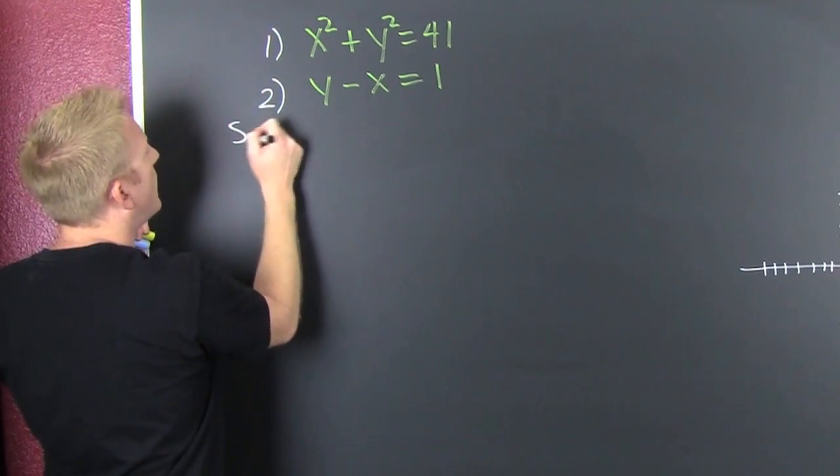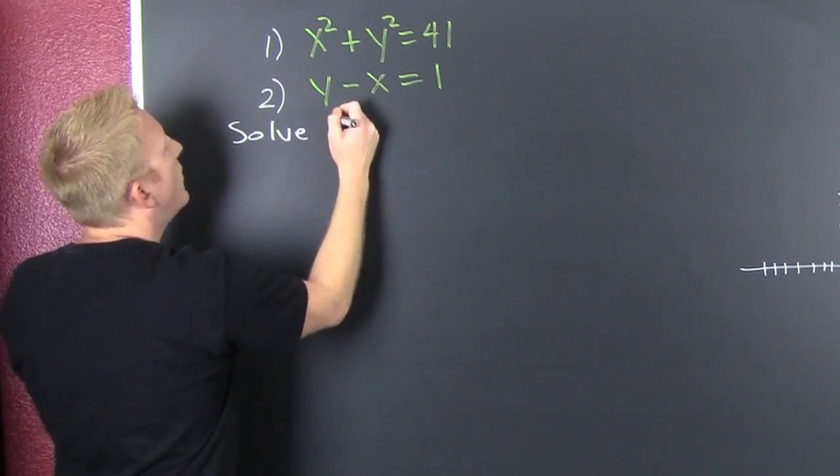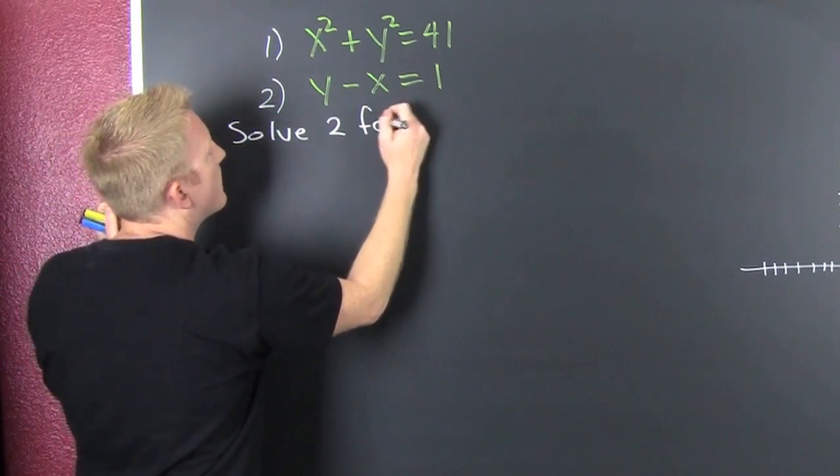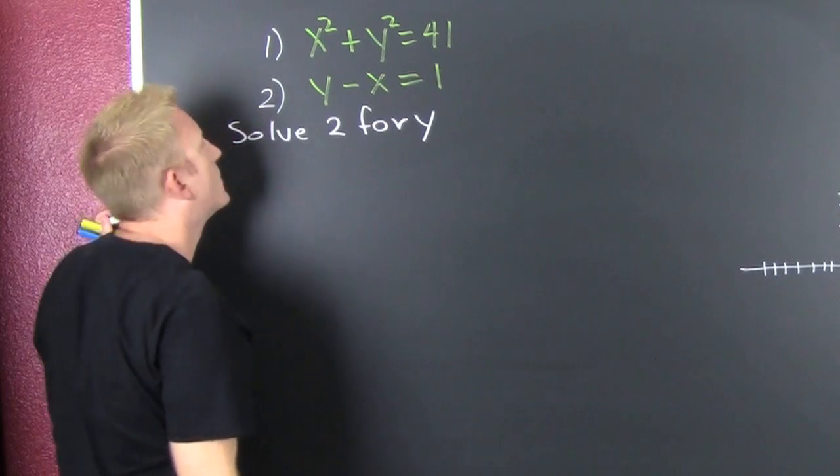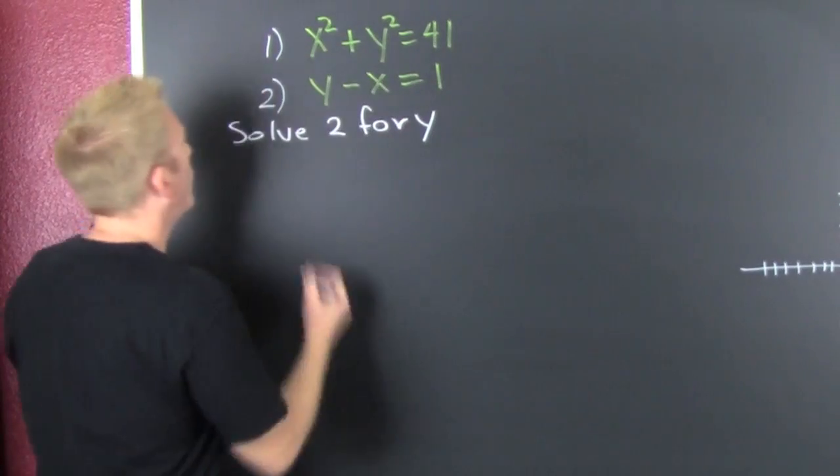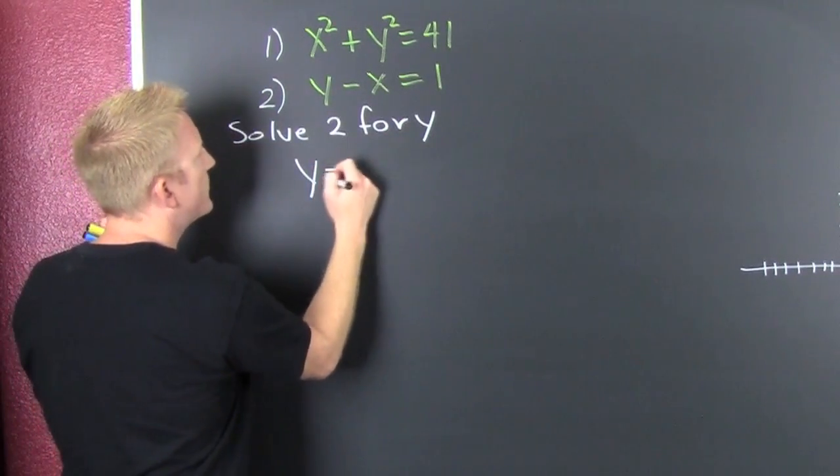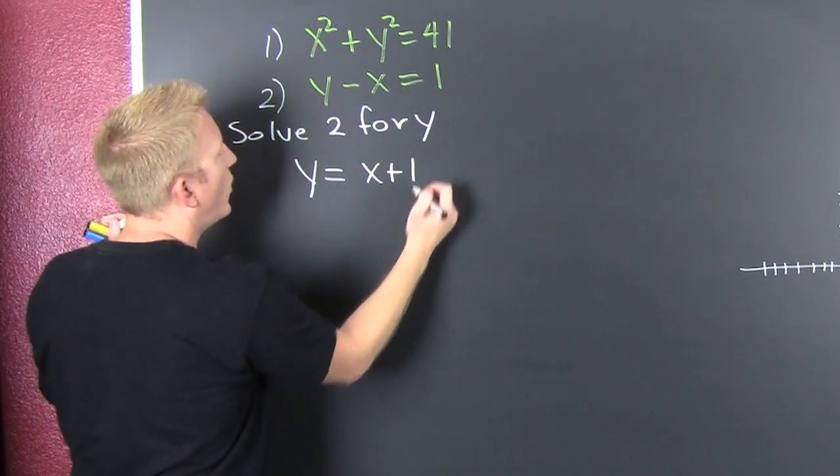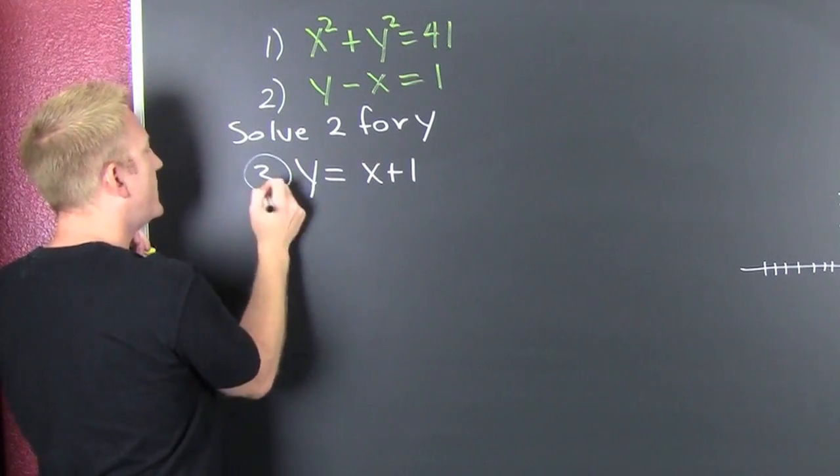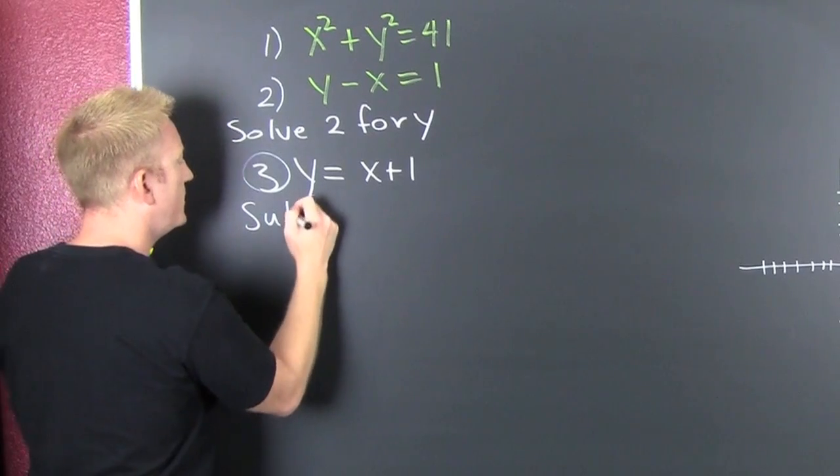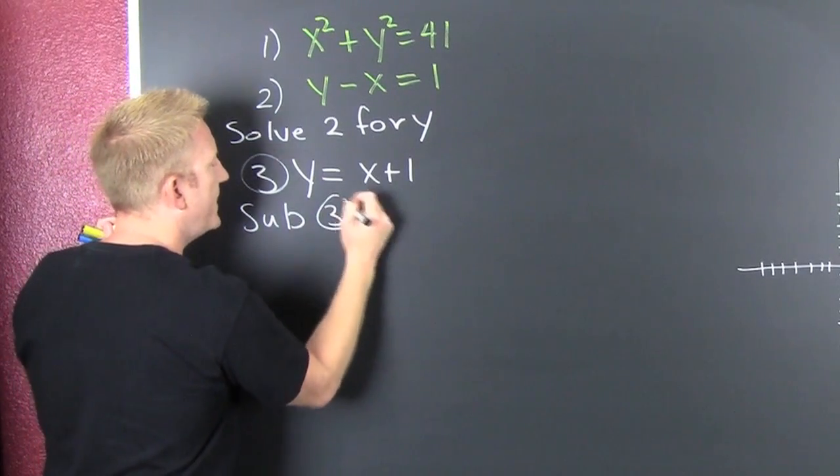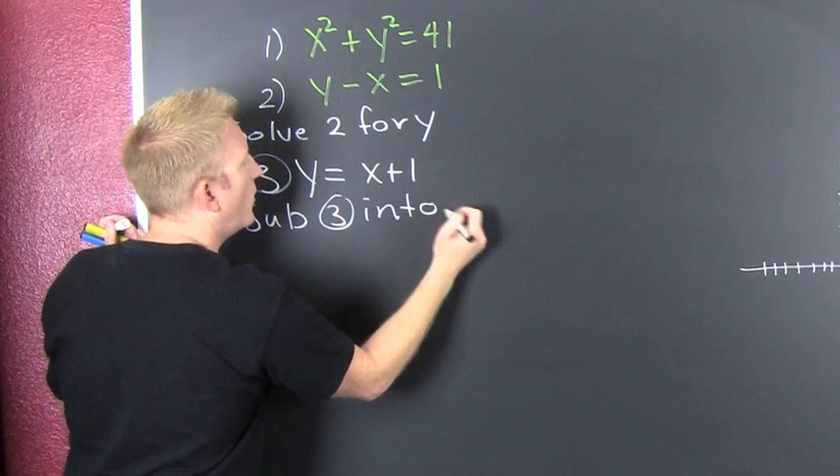What I want to do is I want to solve 2 for y. I could also solve it for x, but what's next? I have y is equal to x plus 1. Let me call that 3 and then I'm going to sub 3 into 1.